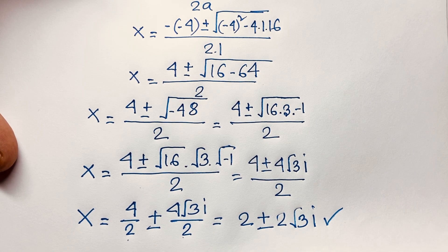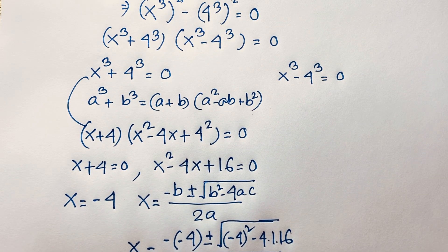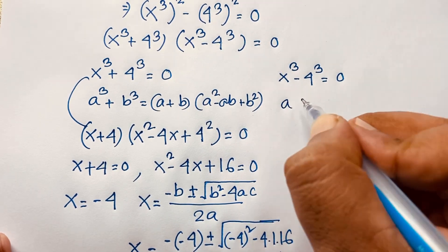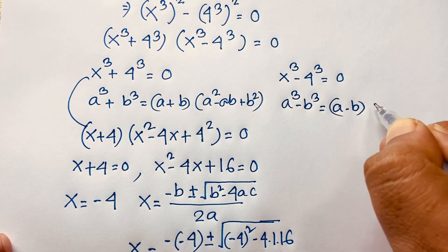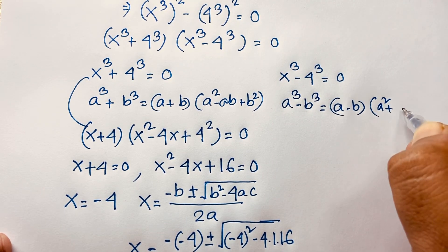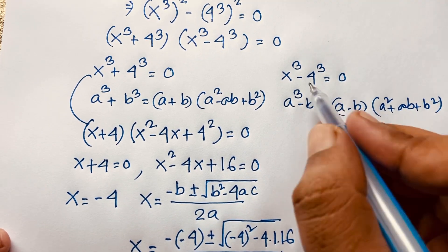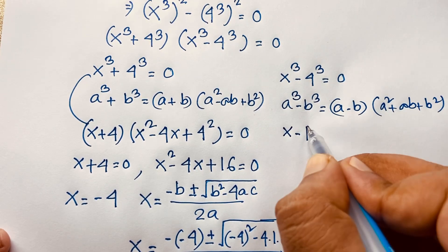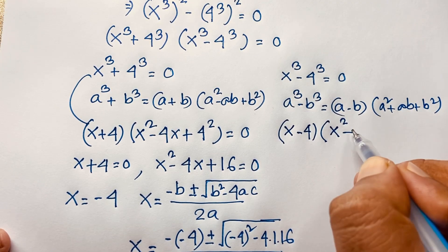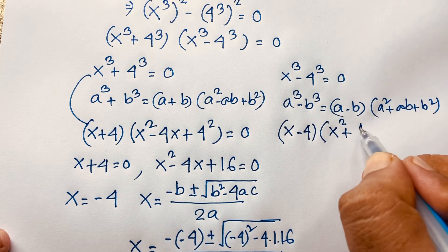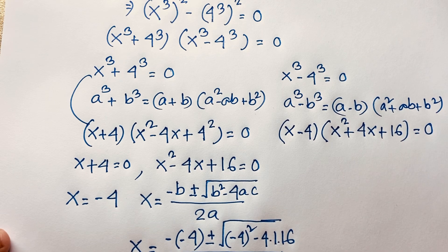Now for the other case, x to the power 3 minus 4 to the power 3 is equal to 0. We know that a cube minus b cube equals a minus b times a squared plus ab plus b squared. Applying this formula here, it will be x minus 4 times x squared plus 4x plus 16 is equal to 0.